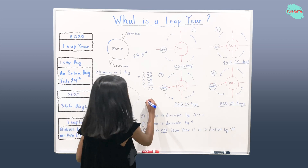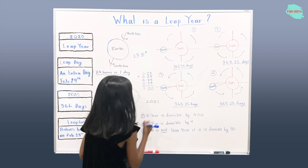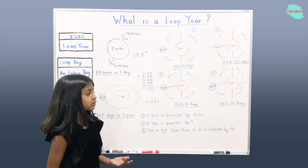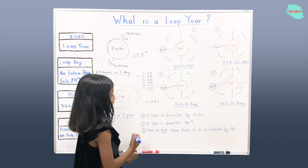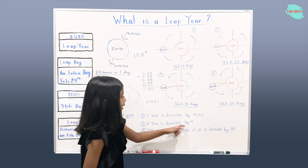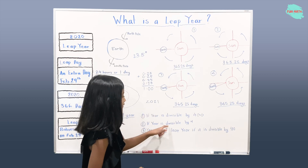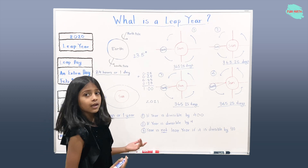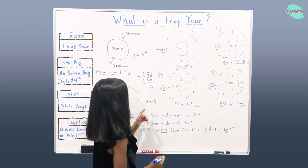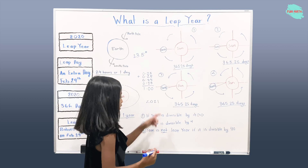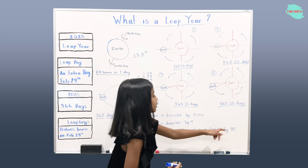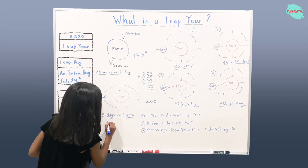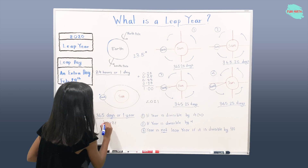Let's take 2021 as an example. Is 2021 divisible by 400? No, it will give us a remainder. Is 2021 divisible by 4? No, it will give us a remainder. Is 2021 divisible by 100? No. That means 2021 is not a leap year.